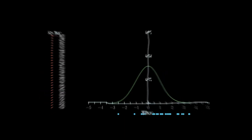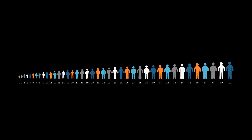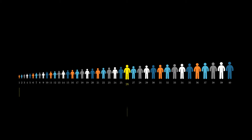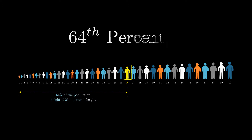Now that we're done with z-scores, let's move on to our main topic: percentiles. We can best visualize percentiles by imagining a group of people with different heights. In this case, we have 40 people with increasing height from the first to the last. We pick the 26th person and find that 64 percent of this population has a height less than theirs. This means the 64th percentile of this population is the height of the 26th person.